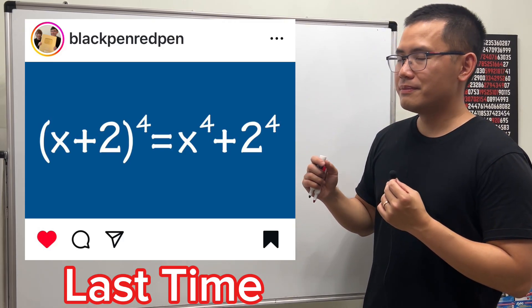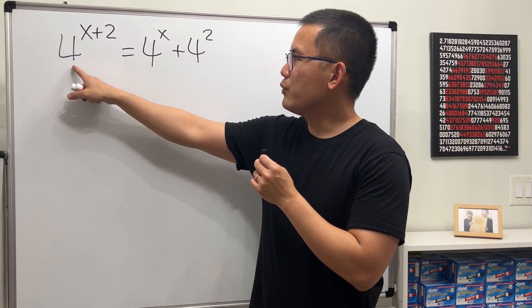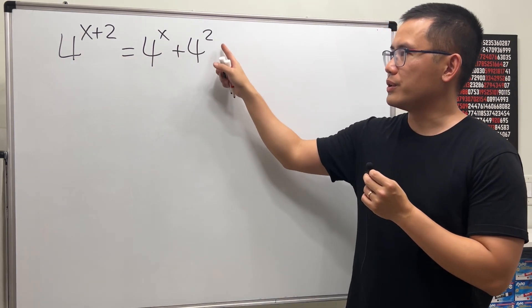Last time I showed you guys this equation. Let's look at the equation: 4^(x+2) = 4^x + 4^2.